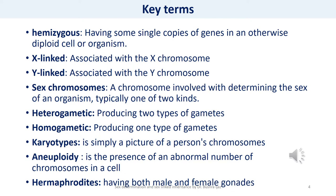Sex chromosomes are chromosomes involved in determining the sex of an organism, typically either X or Y. Heterogametic refers to an individual capable of producing two types of gametes — for example, human males are heterogametic because they produce two types of sperm: one containing an X chromosome and one containing a Y chromosome. Homogametic refers to an individual producing only one type of gamete; for example, all eggs produced by human females carry an X chromosome. A karyotype is a picture of an individual's chromosomes. Aneuploidy is the presence of an abnormal number of chromosomes in a cell.